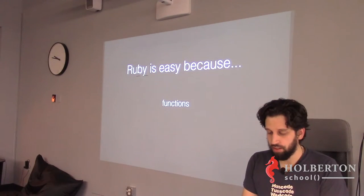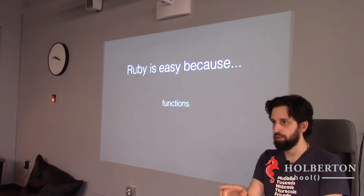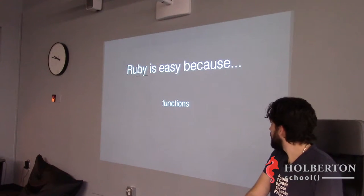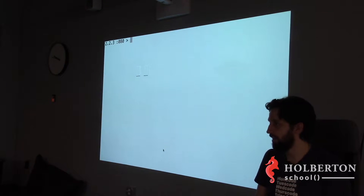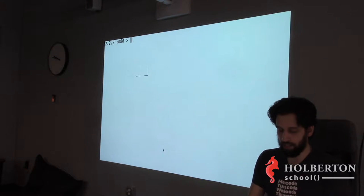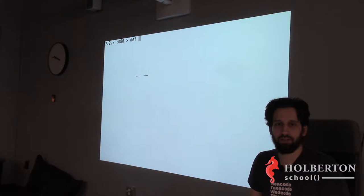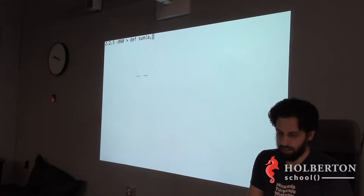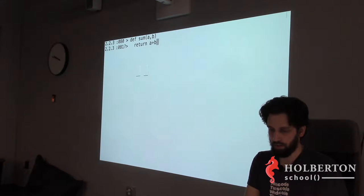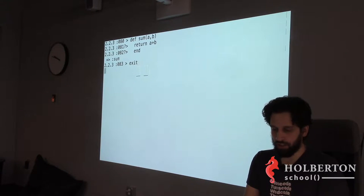The last bit for 'Ruby is easy': functions. The keyword for functions in Ruby is `def` — same as in Python. To write a sum function with two variables a and b: `def sum(a, b)`, then `return a + b`, then `end`. In IRB it shows the function definition, and if I run it and call `sum(2, 3)` it returns 5.